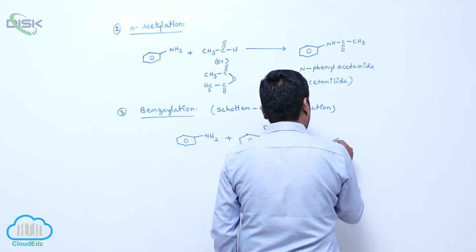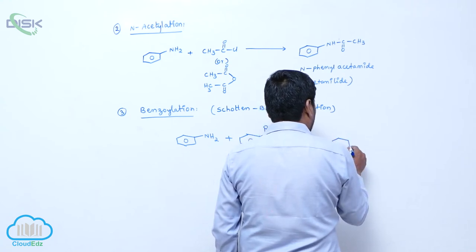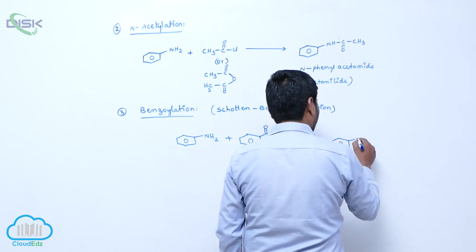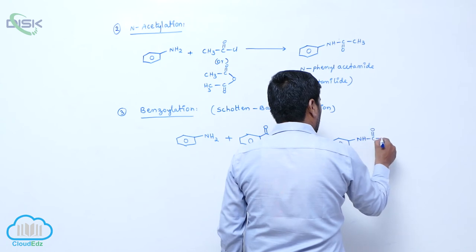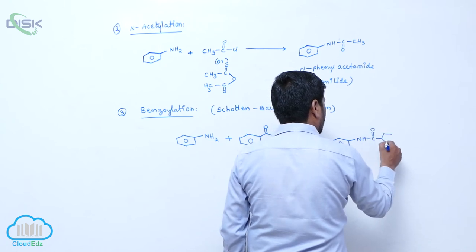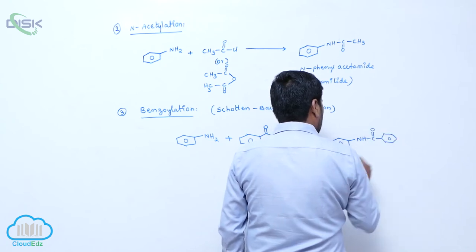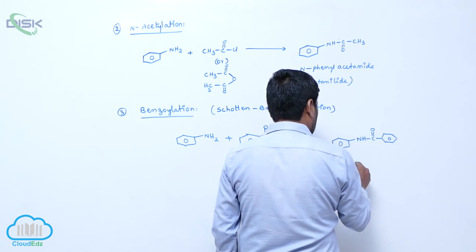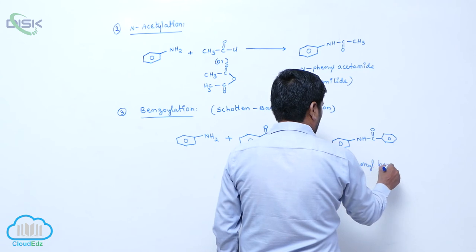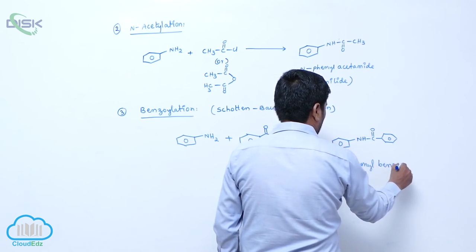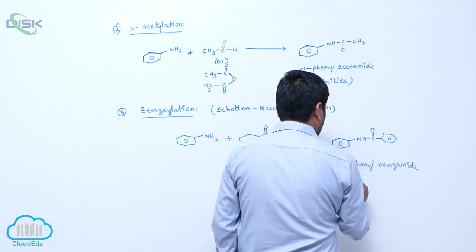To form N-phenyl benzamide, N-H-C double bond O like this. This is known as N-phenyl benzamide.